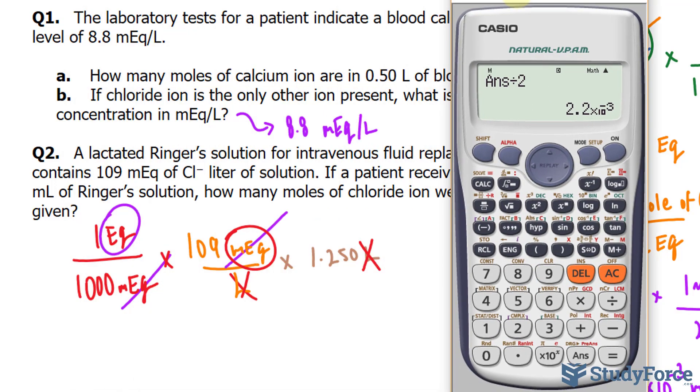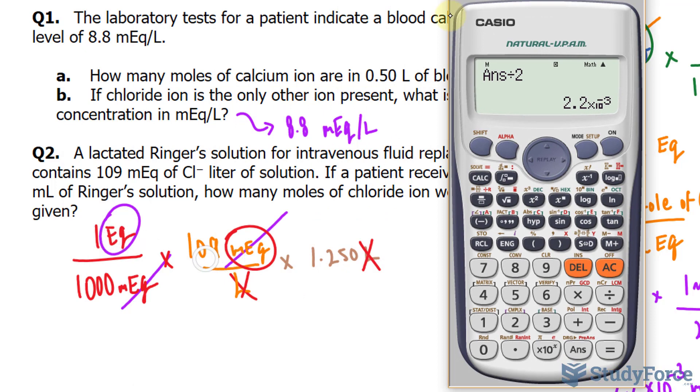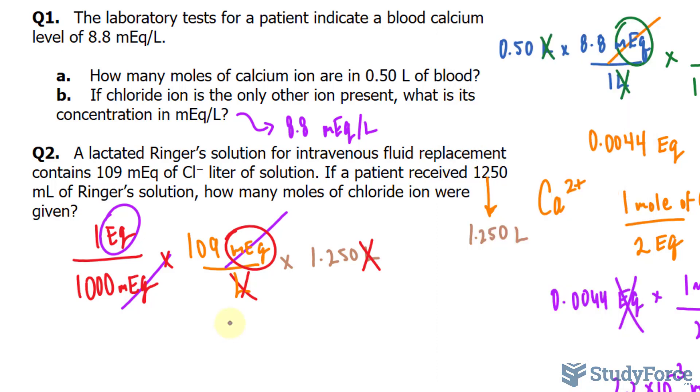So, using our calculator, and starting from the left side, 109 times 1.250 divided by 1,000, and we end up with this number, 0.13625. Remember, this needs to be to three significant figures. So, I'll just place a dot right here. I don't want to round just yet. And that's in equivalent.